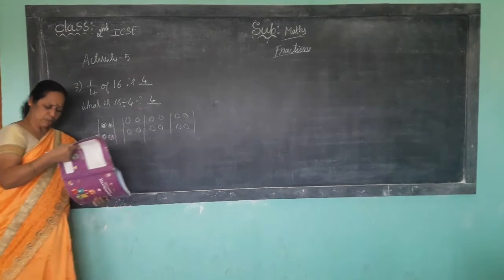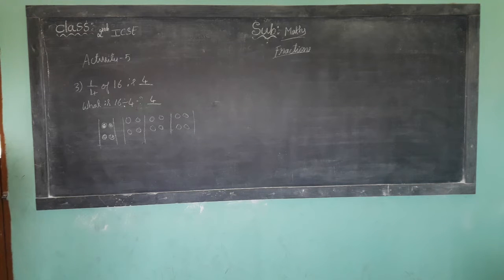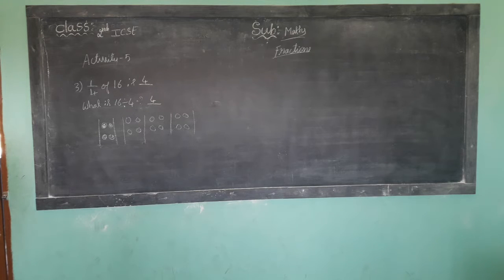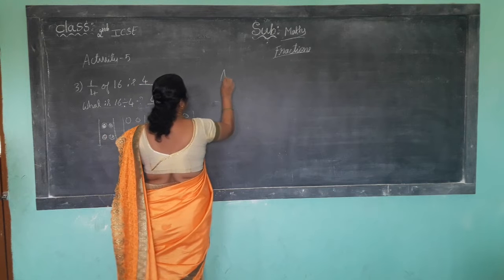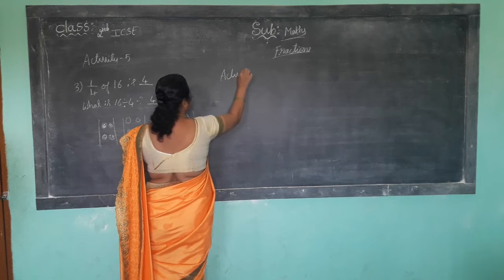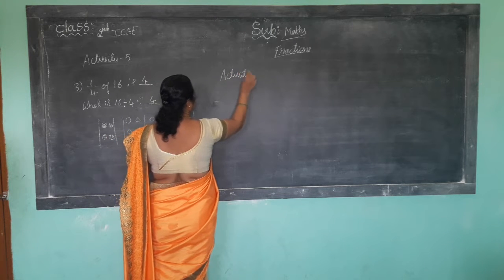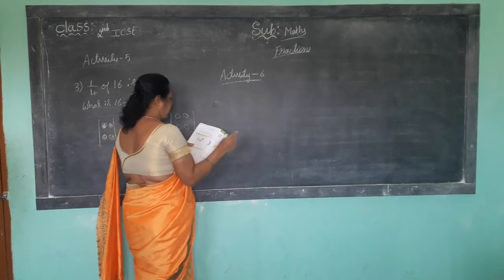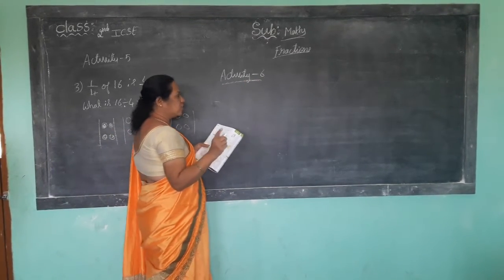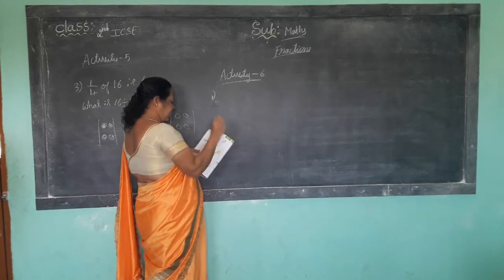Okay children, now coming to page number ninety-two in your textbook. Open your textbook to page number ninety-two — that is Activity 6. How many parts of each one is shaded?